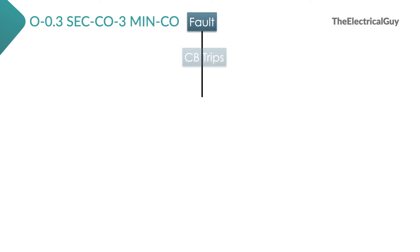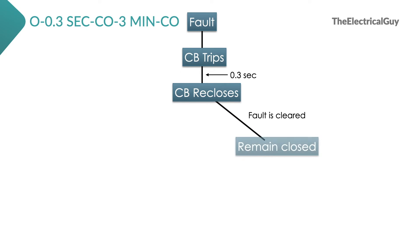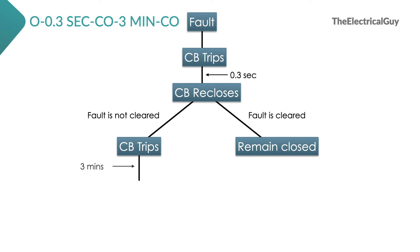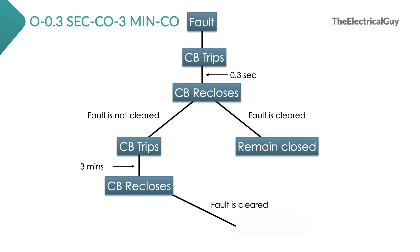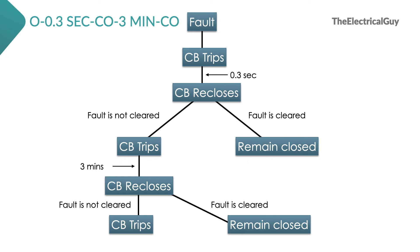Let's say there is a fault on the system and the breaker opens. It will remain in open condition for 0.3 seconds. After 0.3 seconds, it will close again automatically — if the fault is cleared, it will remain in closed condition. But if the fault is still there, the breaker will open immediately. Now the breaker will remain open for 3 minutes. After 3 minutes, the breaker will close again — if the fault is cleared, it will stay closed. But if the fault is still present, the breaker will open immediately again and remain in open condition until it is closed manually. This is one of the very important features of a circuit breaker.